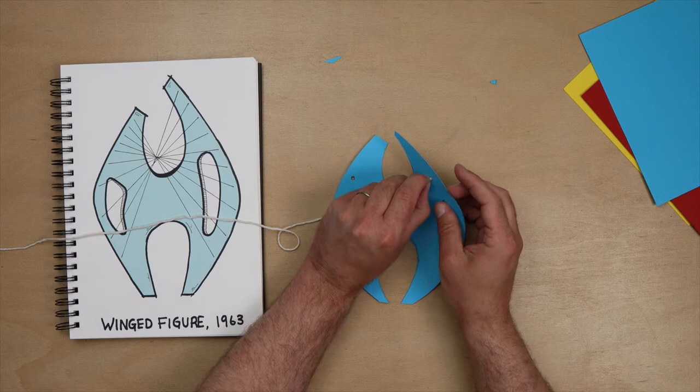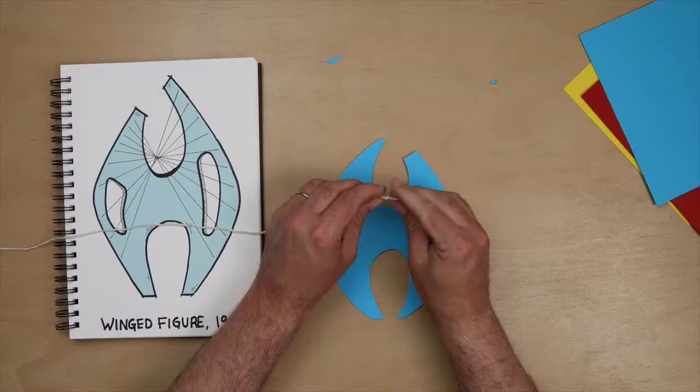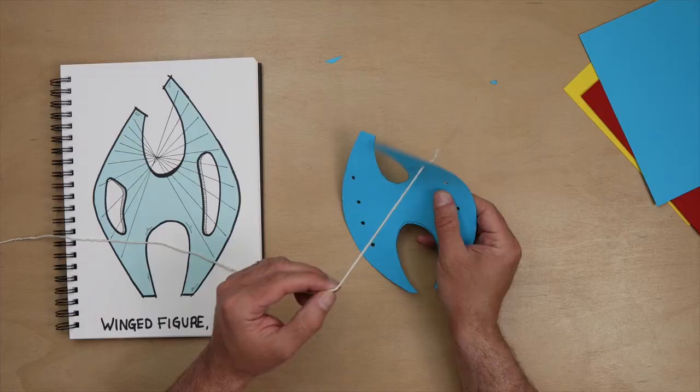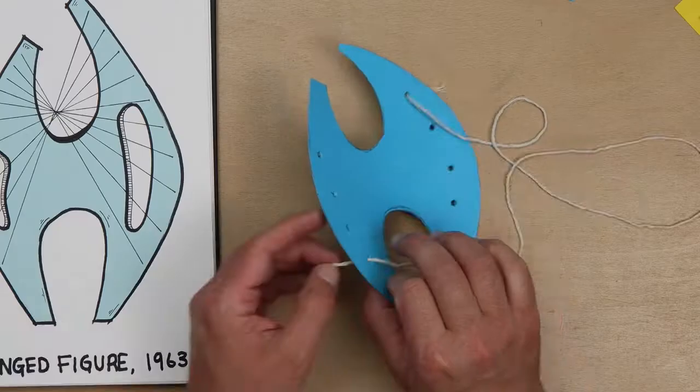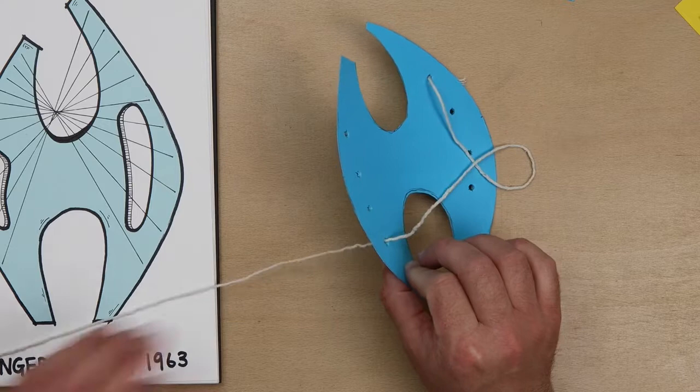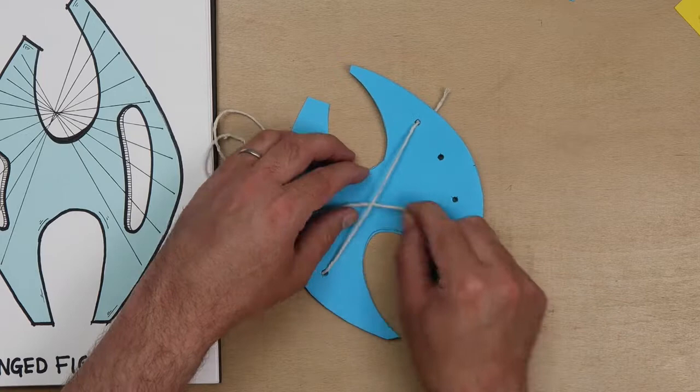Grab some string and feed it into one of the holes. Then tie a knot on the back to keep it in place. You can also use tape if it's easier. Thread the string through an opposite hole and then feed through the back of another. And keep doing this until all the holes are complete.